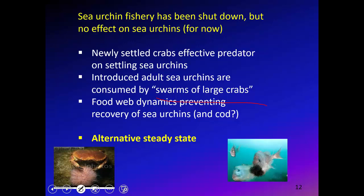This is an example of food web dynamics preventing the recovery of sea urchins, and possibly the same is true for cod. Even though fishing is highly regulated, the system may be in an alternative steady state. Before overfishing, cod were incredibly abundant — quite famously so when Europeans first came to North America. But once we removed them, the ecosystem may have shifted to a new equilibrium that doesn't support large cod populations.